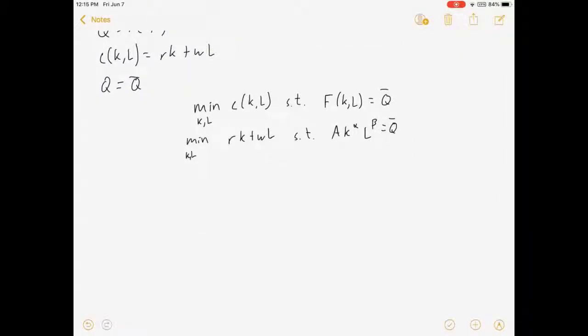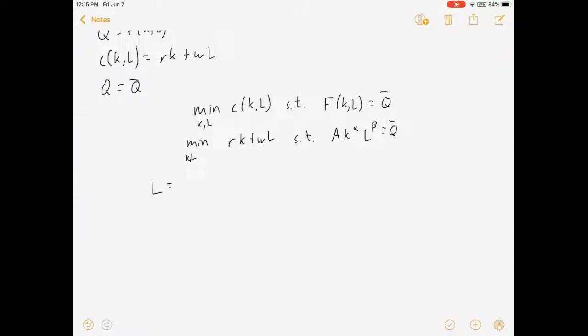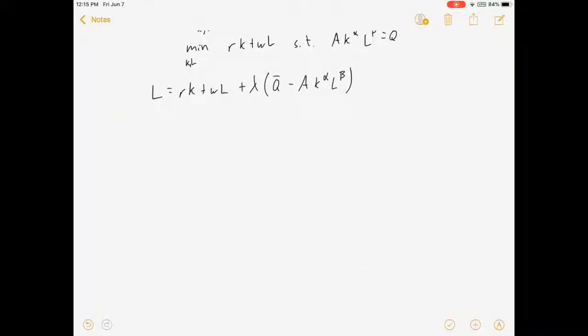Alright, let's make our Lagrangian function: L equals RK plus WL plus lambda times Q bar minus AK to the alpha L to the beta. Alright, with that we are now ready to choose K and L to minimize costs.